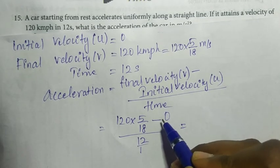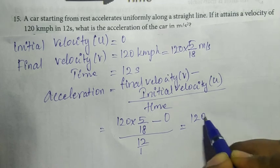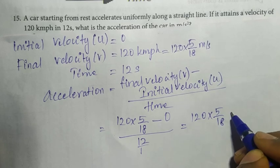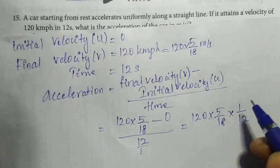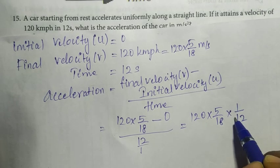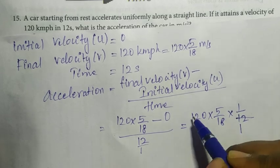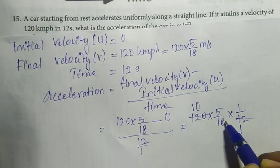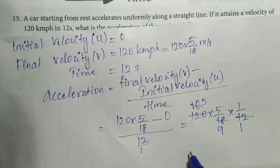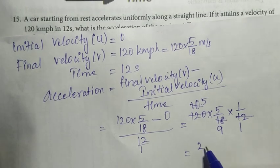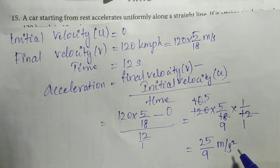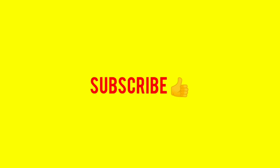Simplifying: 120 × 5/18 divided by 12. Cancel values — 12 cancels, then simplify further. We get 25/9 meter per second squared as the final answer.